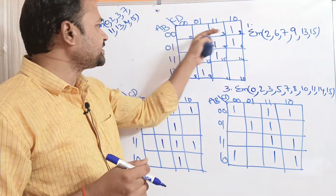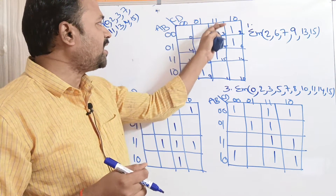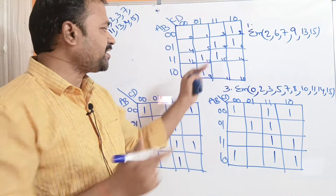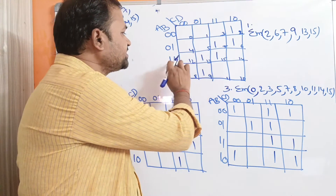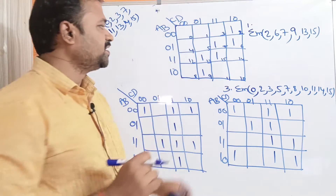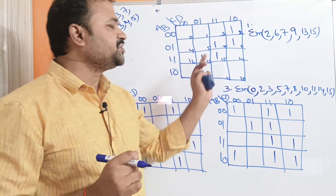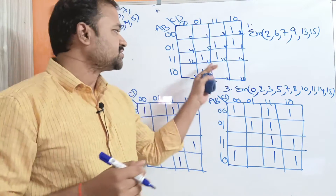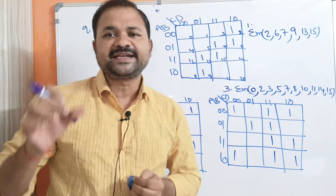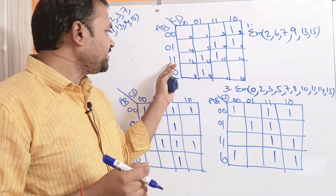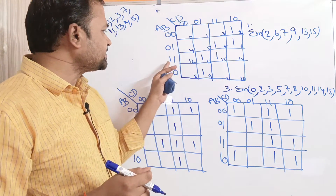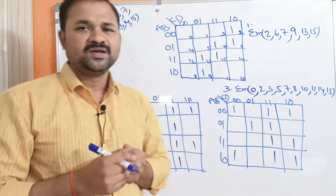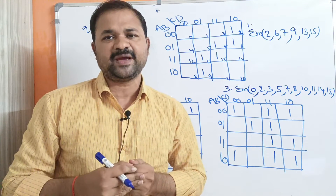The cell 0011 can be written as A-bar B-bar C D. Similarly, the cell representing 1101 in decimal notation is 13, so it represents minterm 13, and we write it as A B C-bar D. Likewise we can represent all cells one by one.